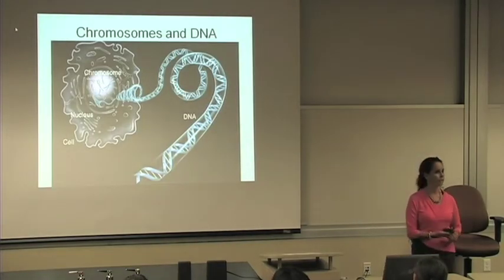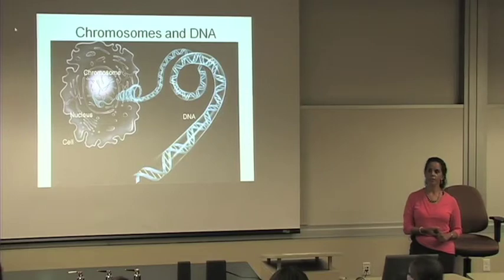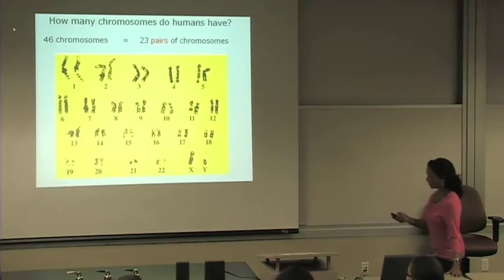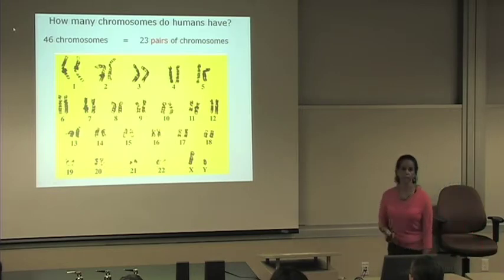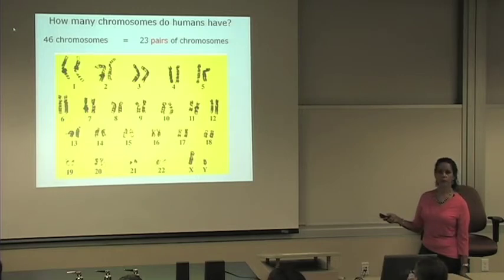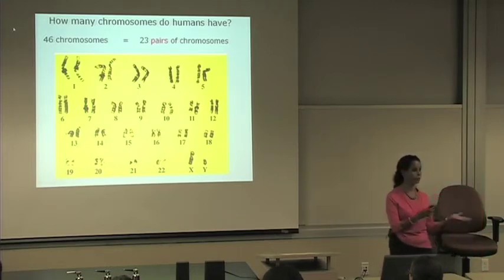So back to chromosomes and DNA. Who knows in this room how many chromosomes humans have? We humans have? Yes. 46. 46 chromosomes. Very good. Humans have 46 chromosomes. And those chromosomes are actually, we can divide them in 23 pairs of chromosomes. So let's take, for example, chromosome number one. We have two very, very similar chromosomes number one. One of them comes from your mother. Mother. And the other one from your father. Father.